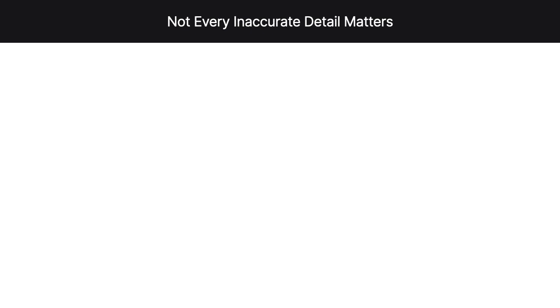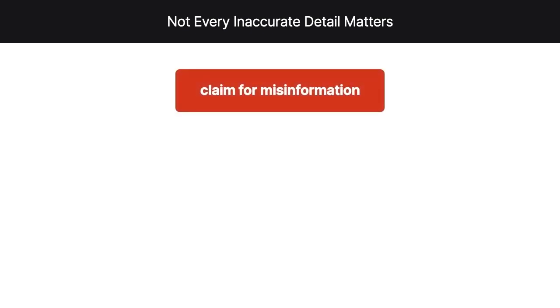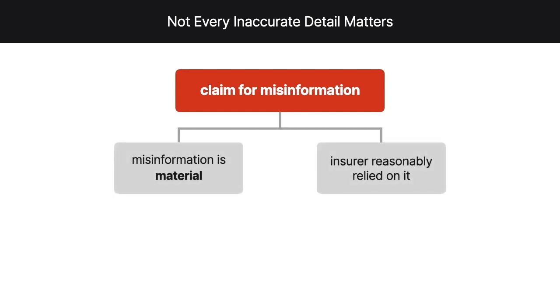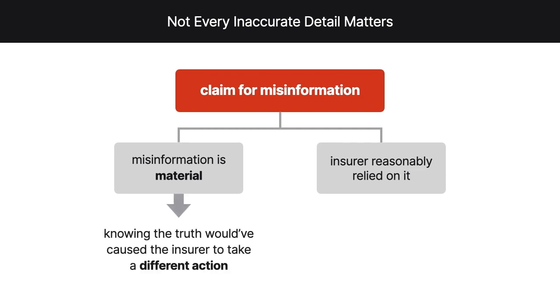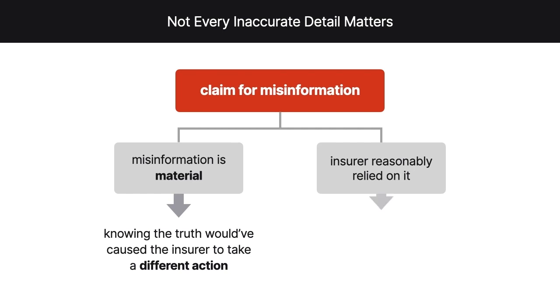However, not every inaccurate detail matters. Typically, an insurance company has a claim for misinformation only if the misinformation is material and the insurer reasonably relied on it. Misinformation is material if knowing the truth would have caused the insurer to take a different action, like not paying a claim or issuing a policy on different terms. An insurer reasonably relied on material misinformation if the insurer's different act would have been reasonable under the circumstances.